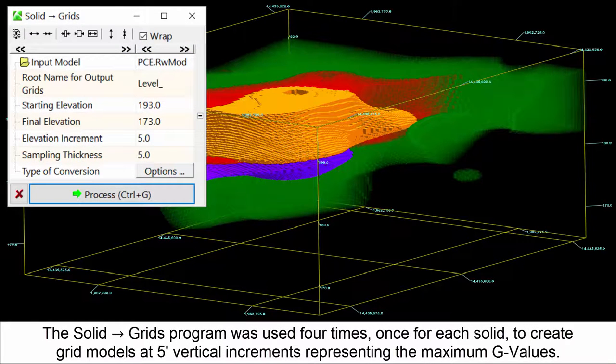The solid-to-grids program was used four times, once for each solid, to create grid models at five-foot vertical increments representing the maximum G values.